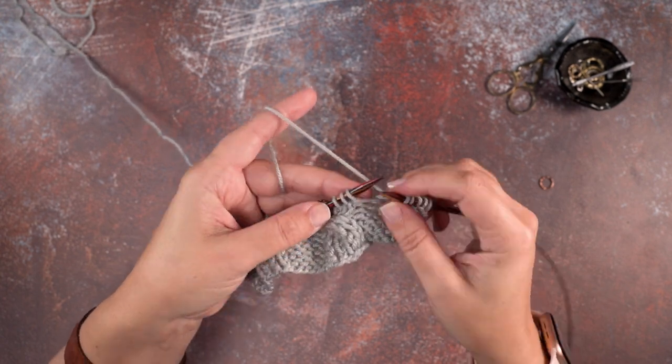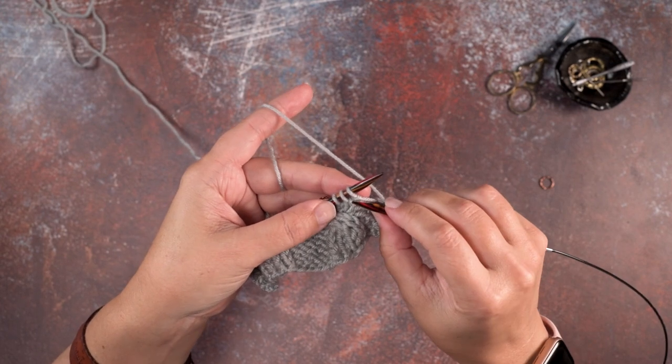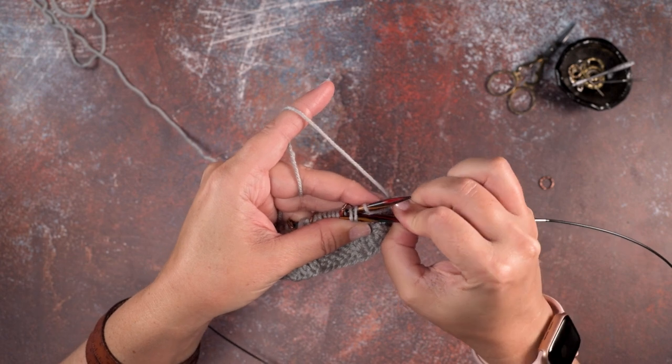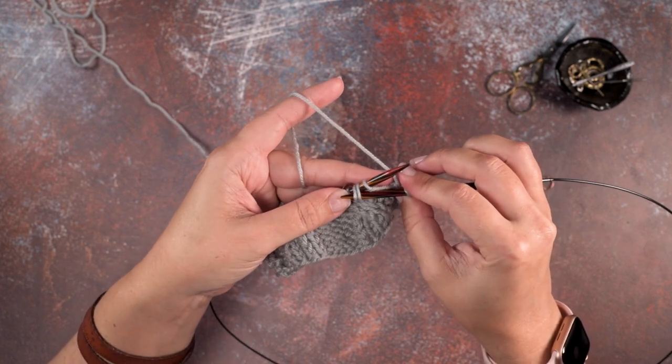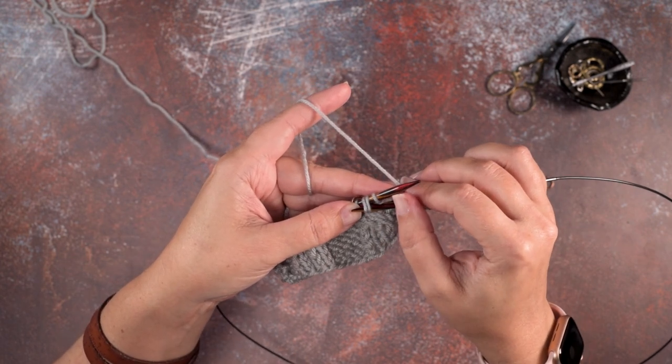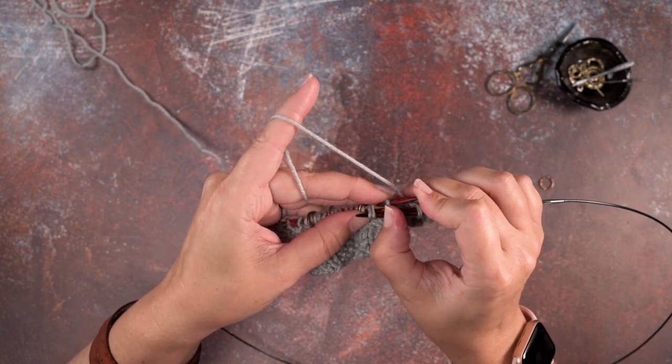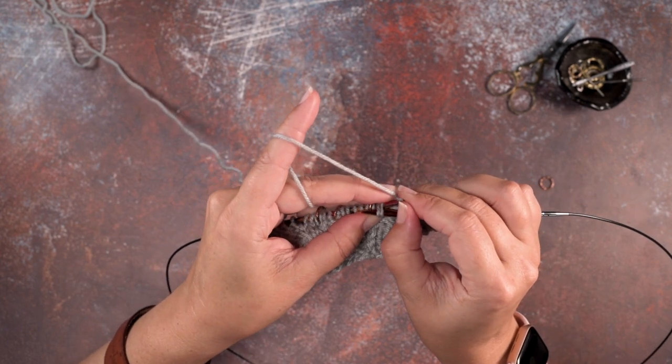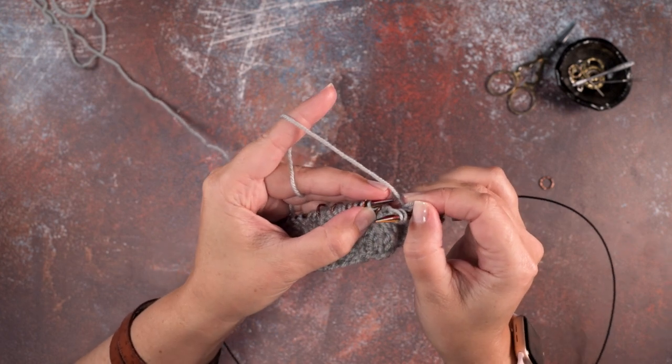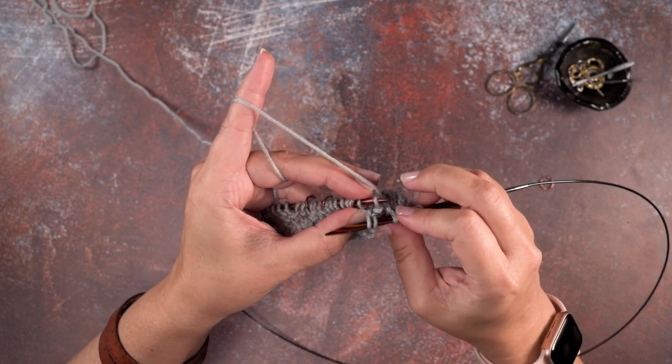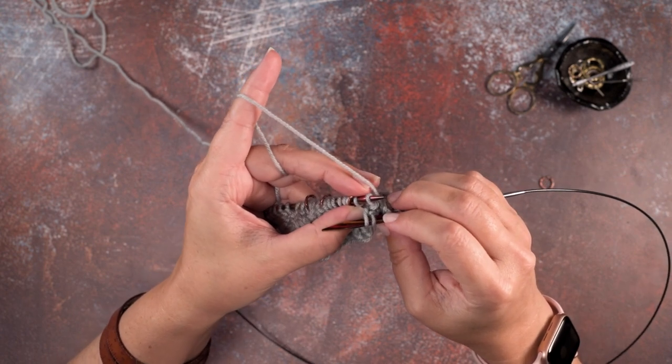The first thing we're going to do is use our right needle tip and insert that tip purlwise through those two stitches that we want to place at the beginning of our cable. Now we're going to grab that purl stitch and we're going to pinch it so it doesn't go anywhere and we're going to pull all three stitches off and then scoop up in the back here and pop that purl stitch onto our left hand needle.